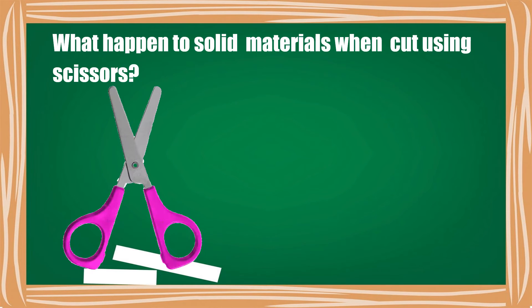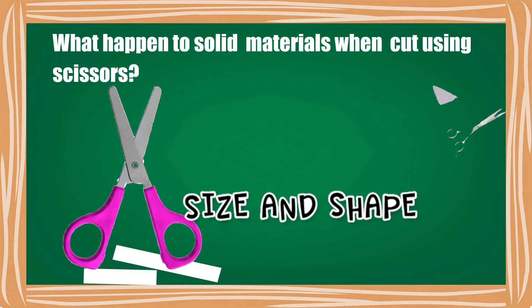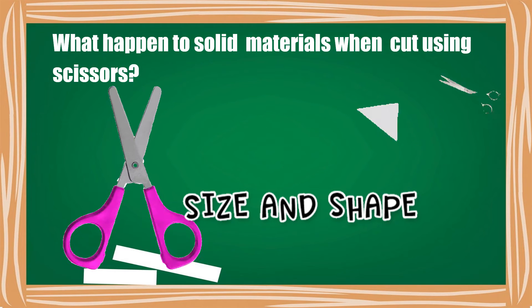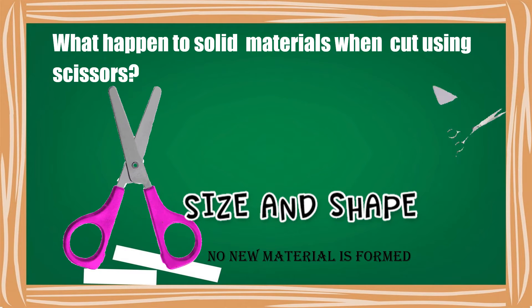What happens to solid materials when cut using scissors? Let us observe. Solid materials may change their size and shape, and no new material is formed.